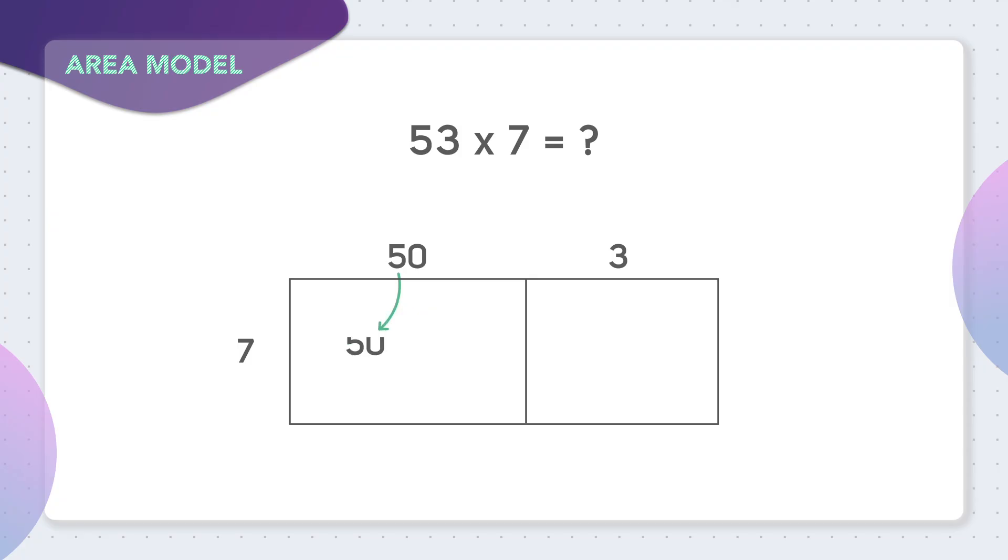In the first box, we were going to multiply 50 times 7. To solve this, you just ignore the 0 and multiply 5 times 7. That gives you 35. From there, you can just add the 0. 50 times 7 is 350.